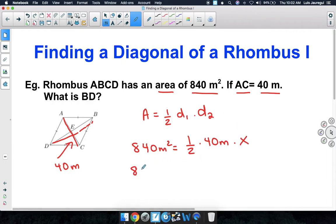Now, simplifying this, we're going to get 840 square meters is equal to half of 40 meters, which is 20 meters, times X.